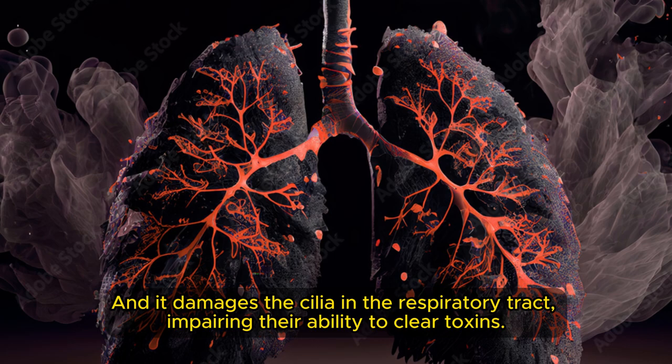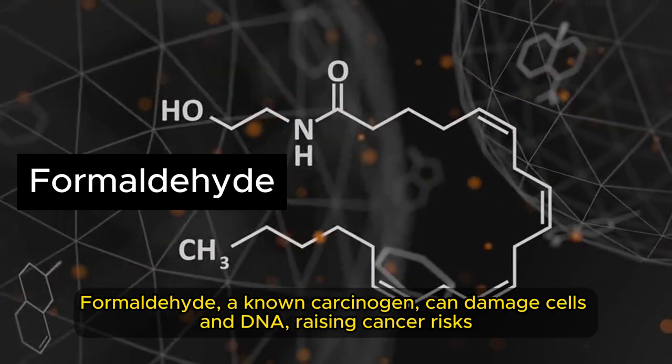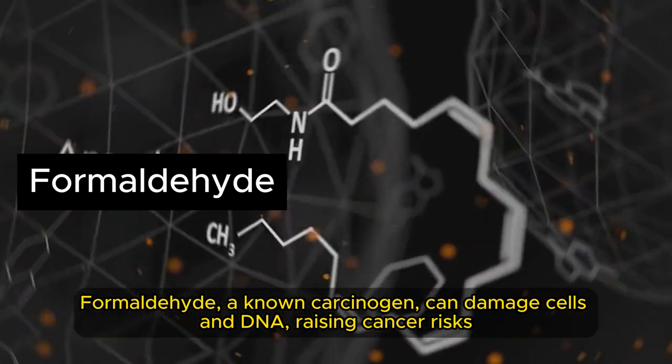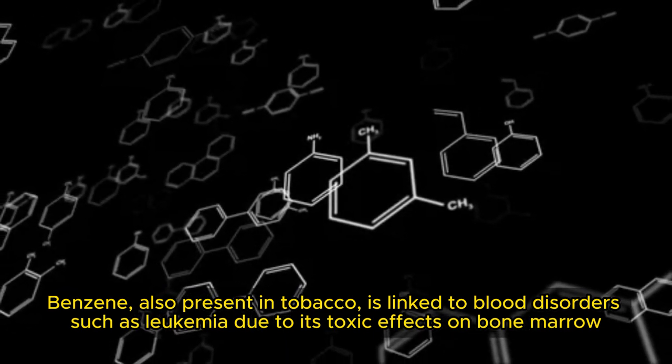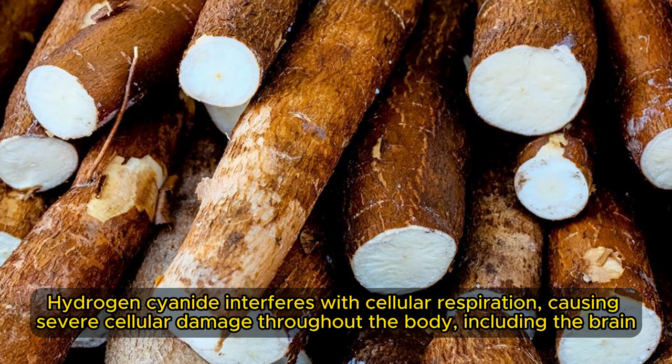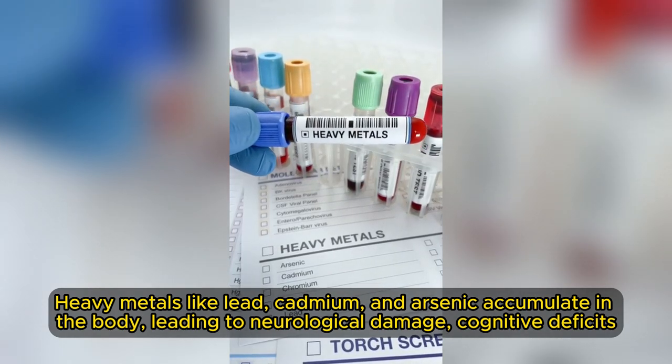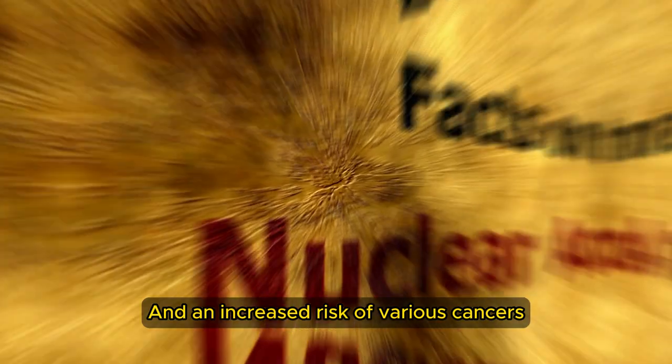Tar found in tobacco smoke contains numerous carcinogens that can lead to lung cancer and respiratory diseases, and damages the cilia in the respiratory tract. Formaldehyde, a known carcinogen, can damage cells and DNA, raising cancer risks. Benzene is linked to blood disorders such as leukemia due to its toxic effects on bone marrow. Hydrogen cyanide interferes with cellular respiration, causing severe cellular damage throughout the body including the brain.